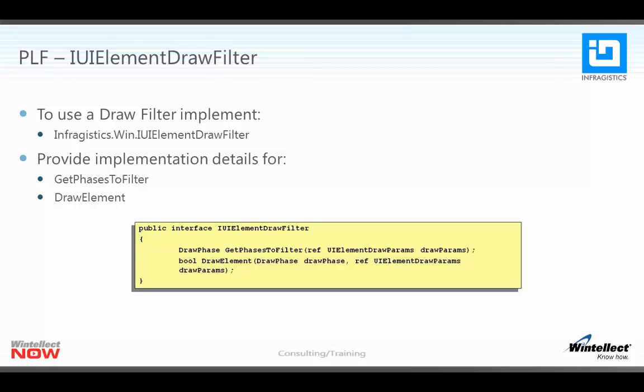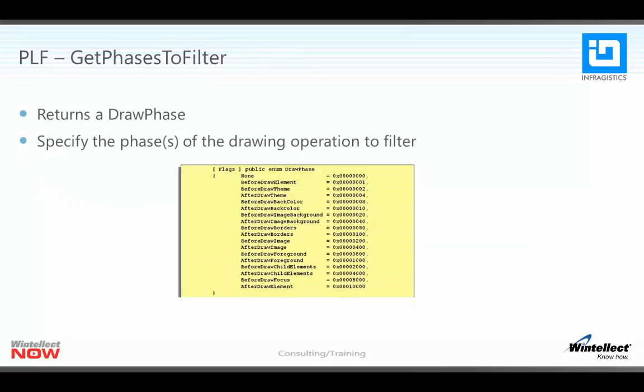The interface exposes two methods, GetPhasesToFilter and DrawElement, which you must provide the implementation details for. In the GetPhasesToFilter method, you are required to return a draw phase. The phase or phases that you return will be the phase of the drawing operation that will be filtered.